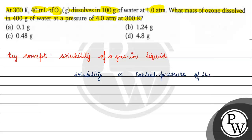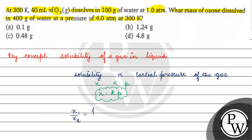So solubility, which we denote as x, is directly proportional to pressure p. We can write this as x = Kp. Therefore, x1 divided by x2 equals p1 divided by p2, where x1 and x2 are solubilities at pressures p1 and p2 respectively.